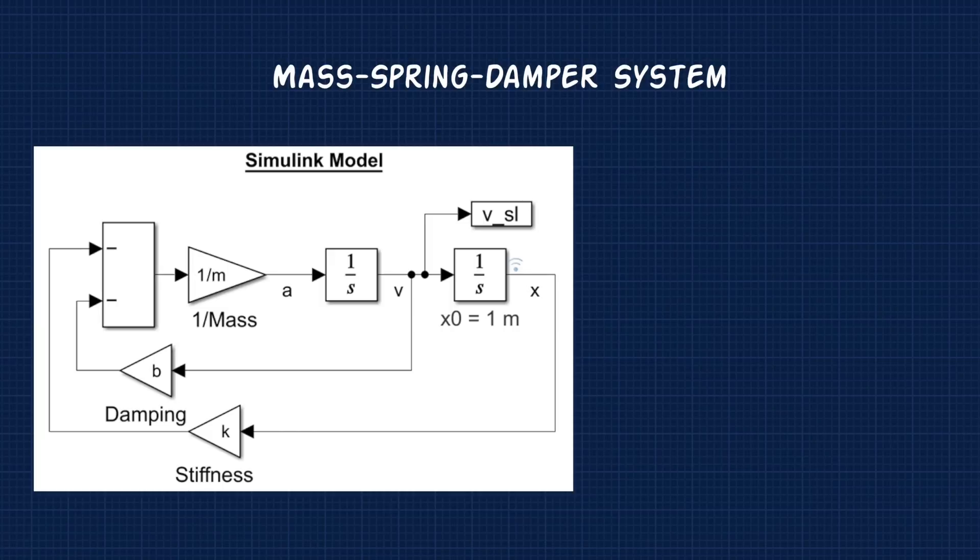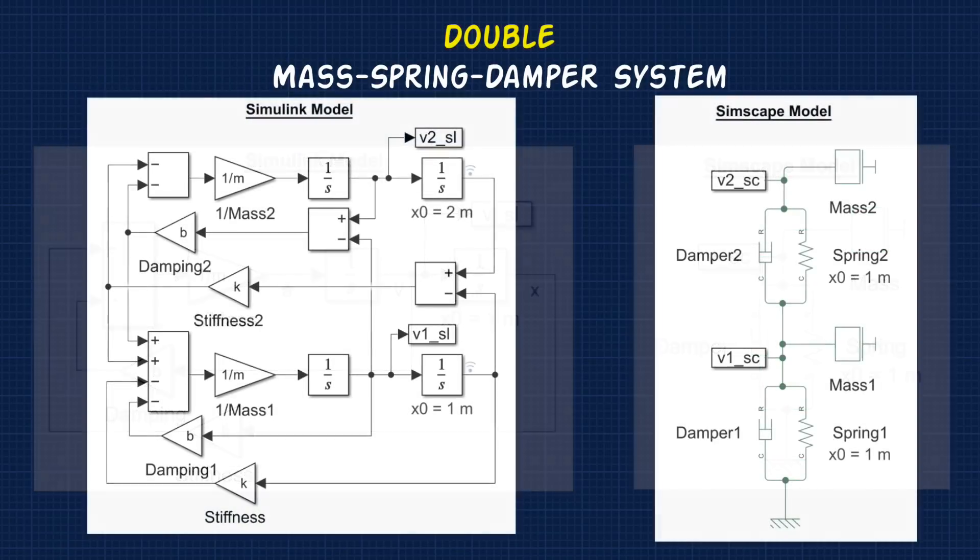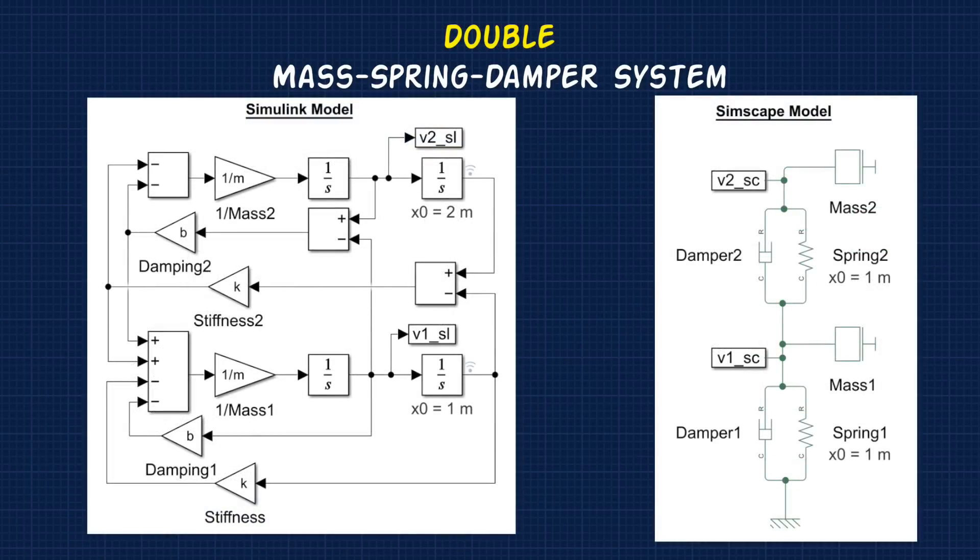For example, a mass spring damper could be modeled with the Simulink blocks on the left, or equivalently as a physical model with the Simscape blocks on the right. This type of modeling is really helpful when you start dealing with multi-body dynamics. You can see how much more complex the differential equations become for a double mass spring damper system compared to the equivalent physical component model.